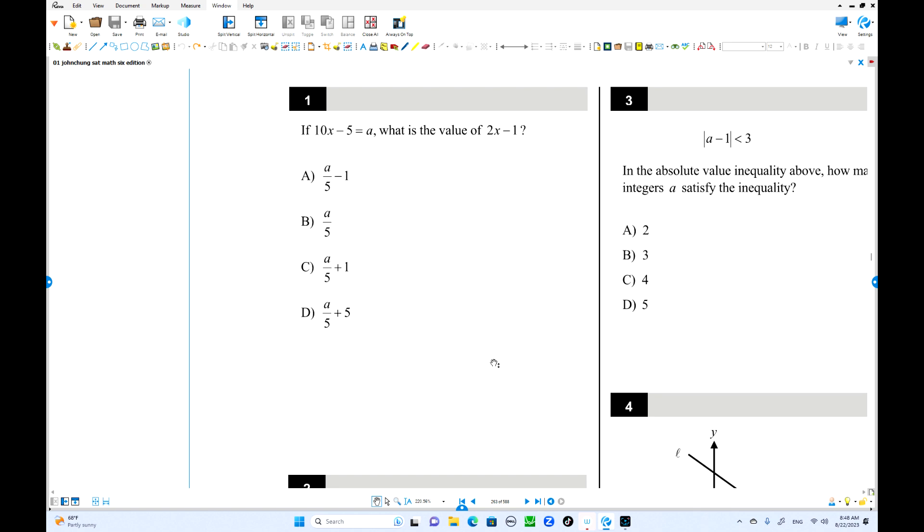Number 1. 10x minus 5 is 8. What is the value of 2x minus 1? When you tackle over 5, when you divide by 5, you'll get 2x minus 1 directly. So A over 5. That's right. So choice B is the answer.